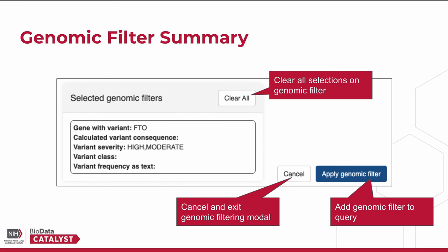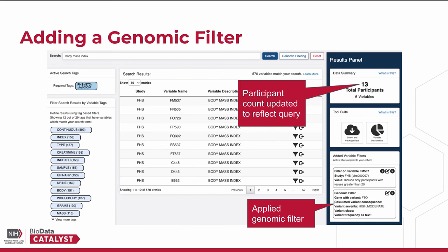Let's add the filter to our query. Once the Apply Genomic Filter button is clicked, the results panel on the right side of the screen will be changed. The participant count in the data summary box will be updated to reflect the new query criteria. In this case, there are 13 participants that have a body mass index greater than 20 and a high or moderate severity variant in the FTO gene. Additionally, we can see the genomic filter listed in the Added Variable Filters box.